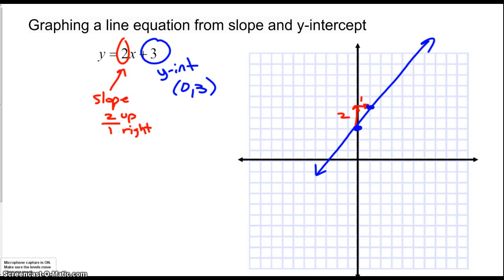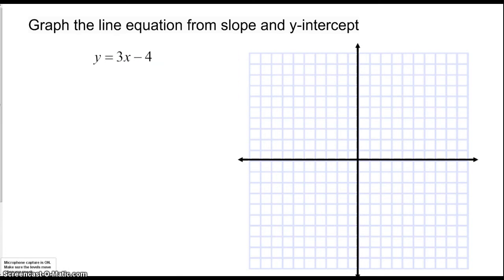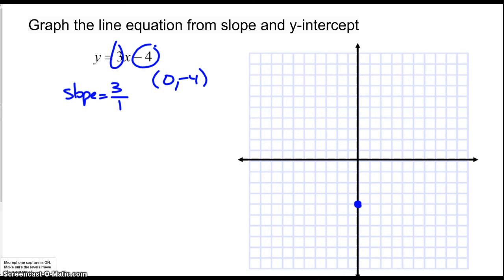Here's an example. The number on the end, including the negative sign, is the y-intercept — so the y-intercept is at 0, negative 4. That's where the line crosses the y-axis. The other number is the slope: 3 over 1, meaning I go up 3 for every 1 to the right. It's a positive slope. I find a second point and draw the line through those two points.